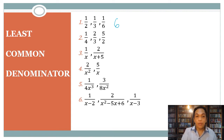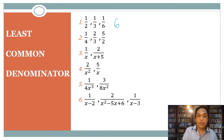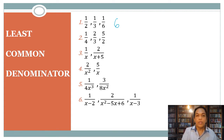For number two, we have one fourth, two thirds, and five over two. Four cannot be divided by three, and three cannot be divided by two, so we need to look for another lowest value that each term can divide.